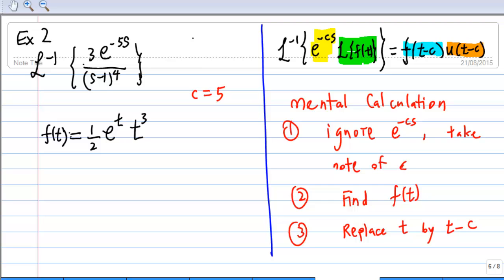Third step is replace t by t minus c in the expression of f(t). So c is equal to 5. You have f of t minus 5 equal to 1/2 e power t changed to e power t minus 5, t cubed changed to t minus 5 power 3.